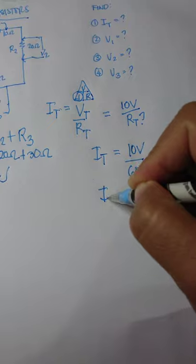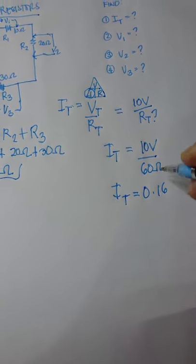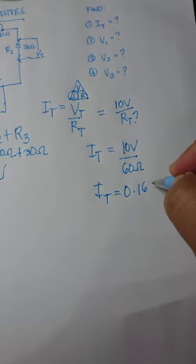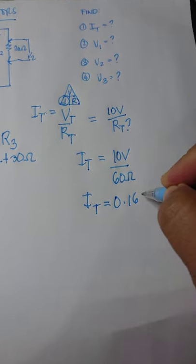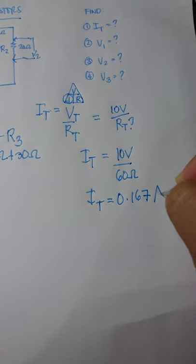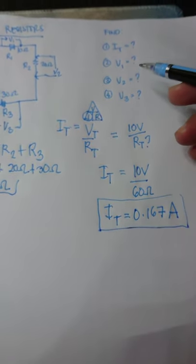We have the total current to be 0.166666, but we can round it off to 0.167 and the unit is Ampere. This is our first unknown.